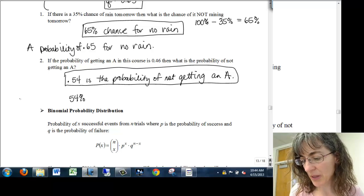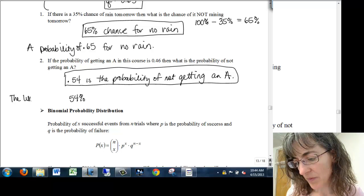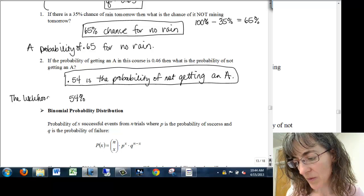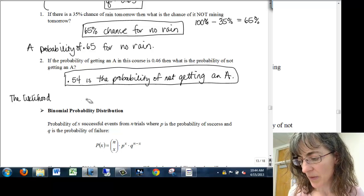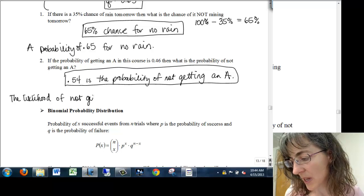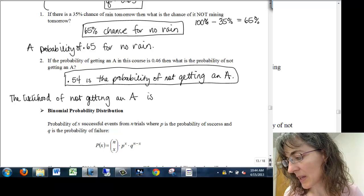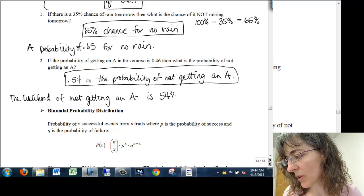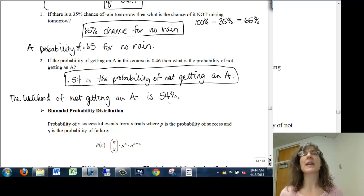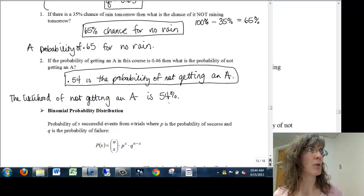It is, and I would put it at the beginning and say the likelihood of not getting an A is 54 percent. Or you could say I'm 54 percent likely to not get an A. Something like that would also be appropriate.